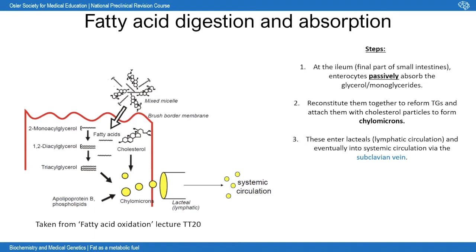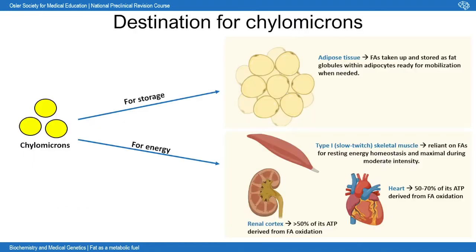The lymphatic vessels drain into the subclavian veins, allowing chylomicrons to enter systemic circulation. Once in the systemic circulation as chylomicrons, they have two possible destinations: they can either be stored as fats in adipose tissue, where fatty acids are reconstituted into fat and form globules within adipocytes, or they can be used up for energy and mobilized when needed — for example, during starvation.